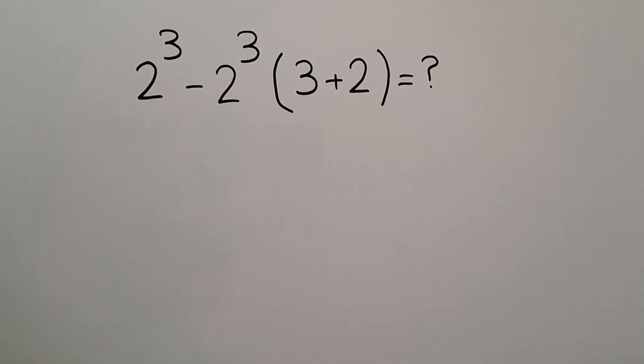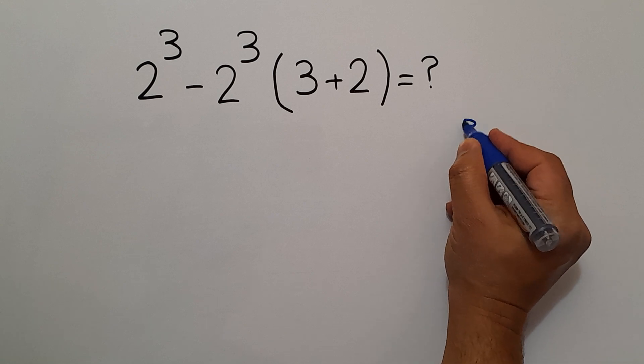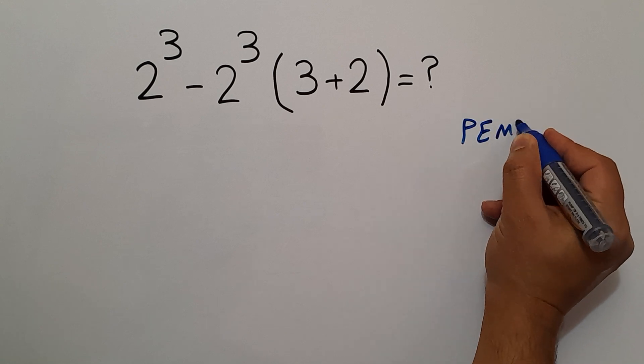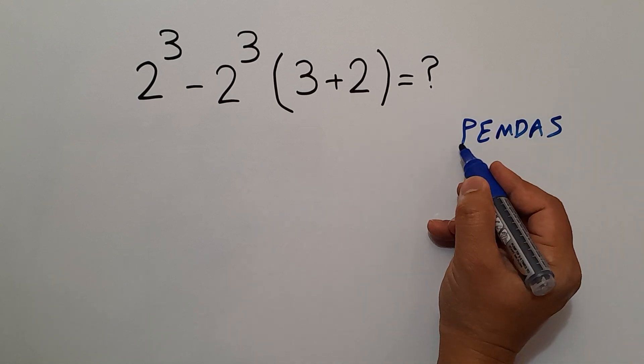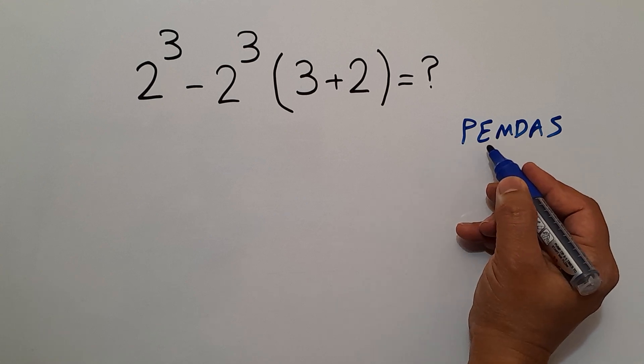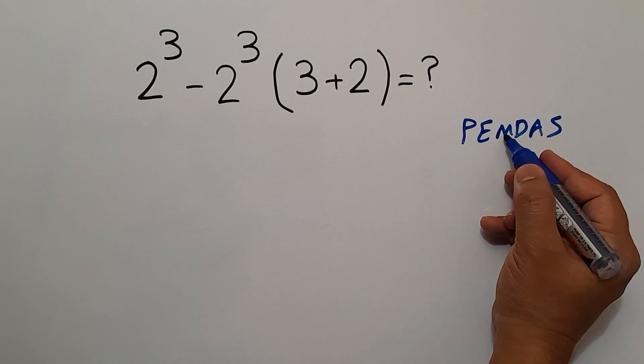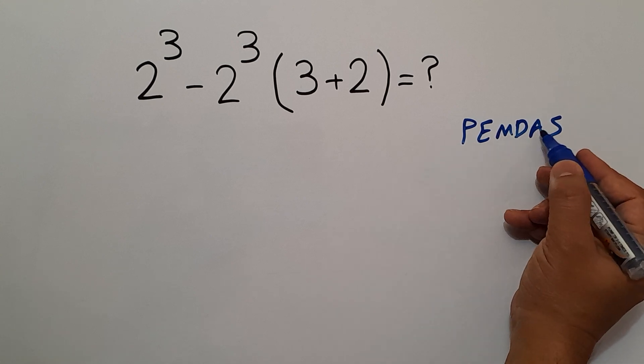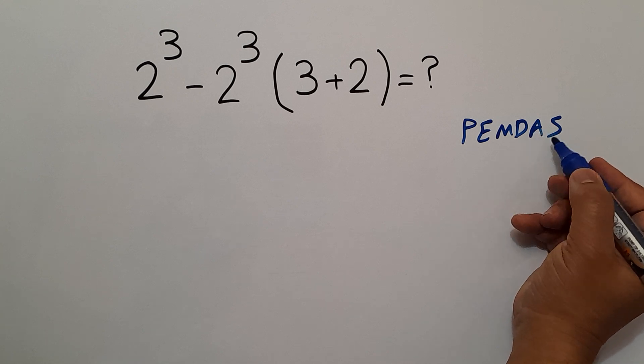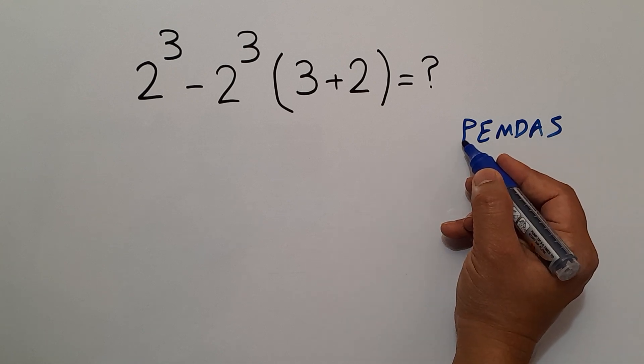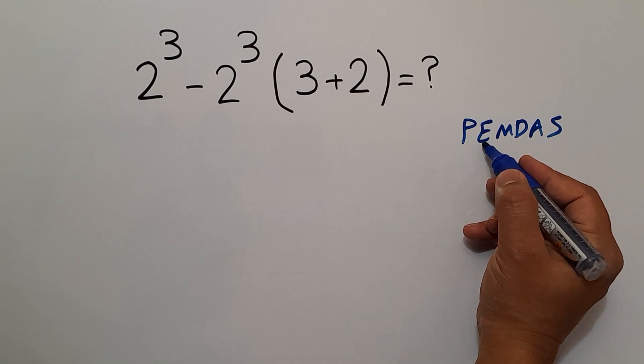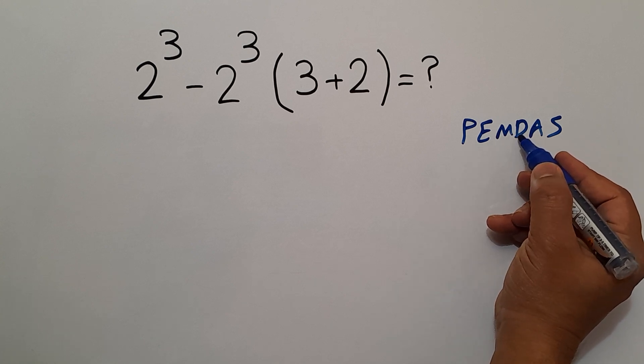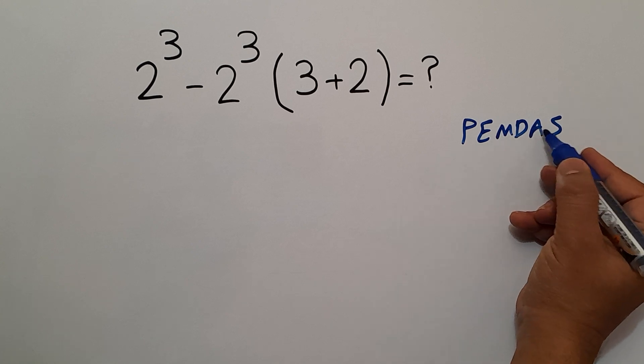Because according to the order of operations, which is PEMDAS, P stands for parentheses, E stands for exponents, M and D stands for multiplication and division, and A and S stands for addition and subtraction. We first do parentheses, then exponents, then multiplication and division, and finally addition and subtraction.